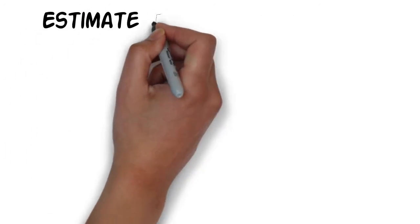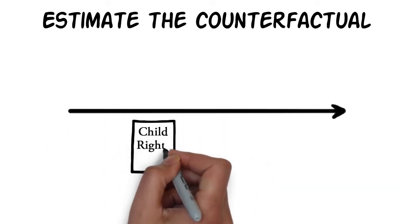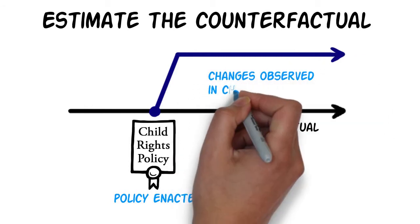If a counterfactual approach is suitable, Carlos could develop an estimate of what would have happened if the child rights policy did not exist, and then compare this to the actual changes.